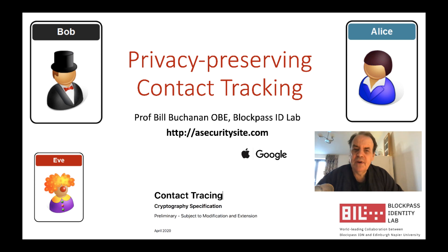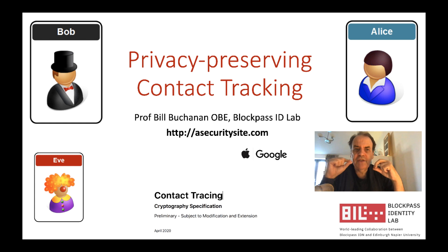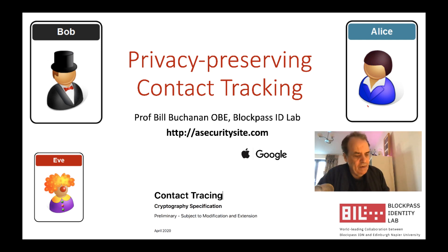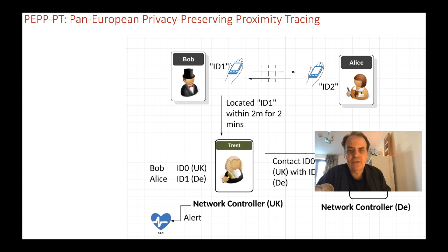Let's have a look at privacy-preserving contact tracing. This is used where there is the possibility of infection between Bob and Alice. While Bob and Alice are free from infection their privacy will be preserved and there should not be any identification of their devices to each other, but when Bob comes near Alice and one of them becomes infected, Bob may get an alert on his phone to say that Alice may be infected. The presentation is mainly based on the contact tracing paper produced by Google and Apple.